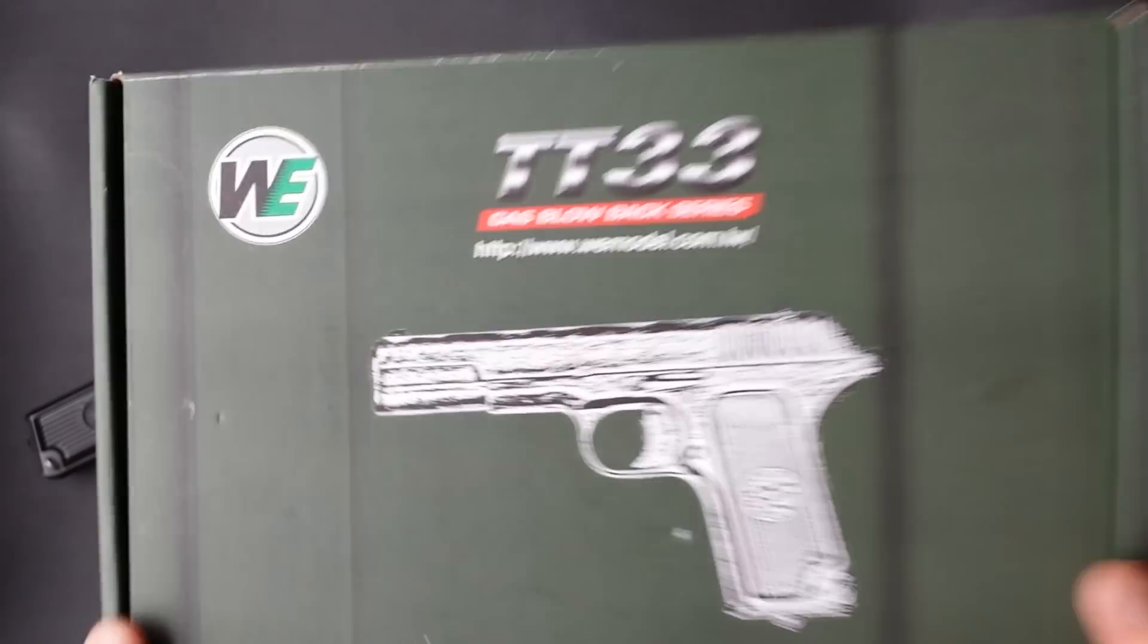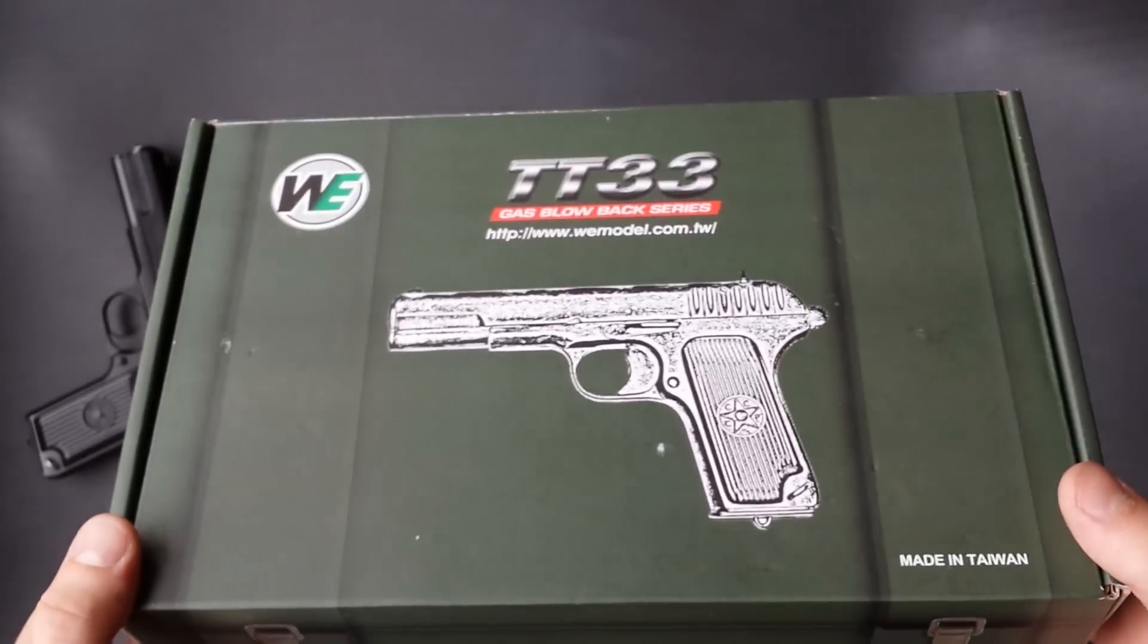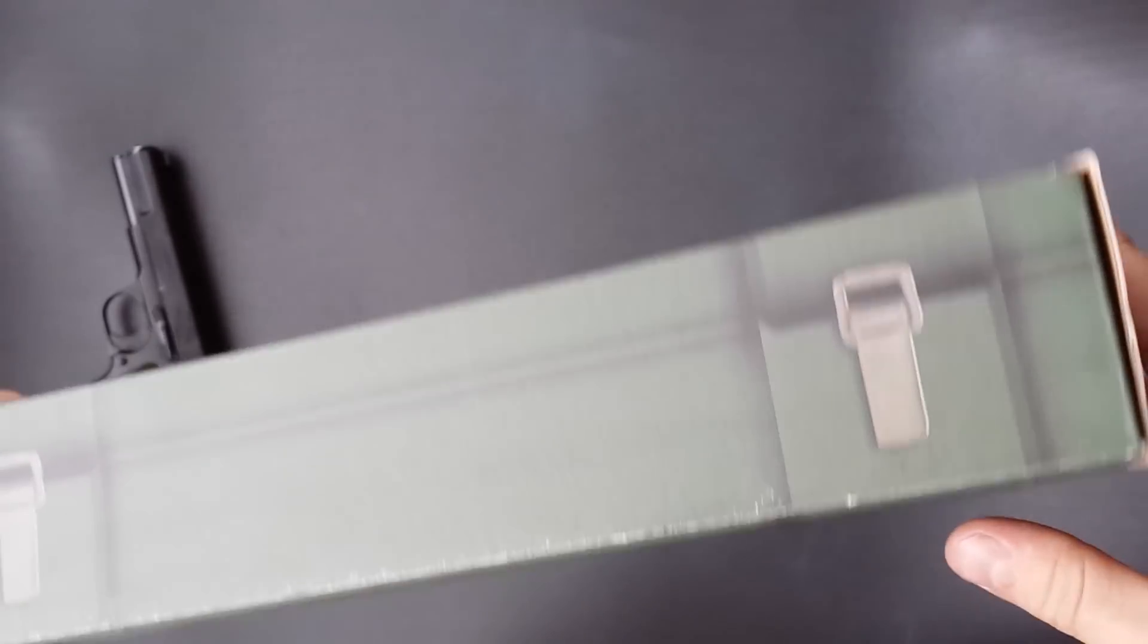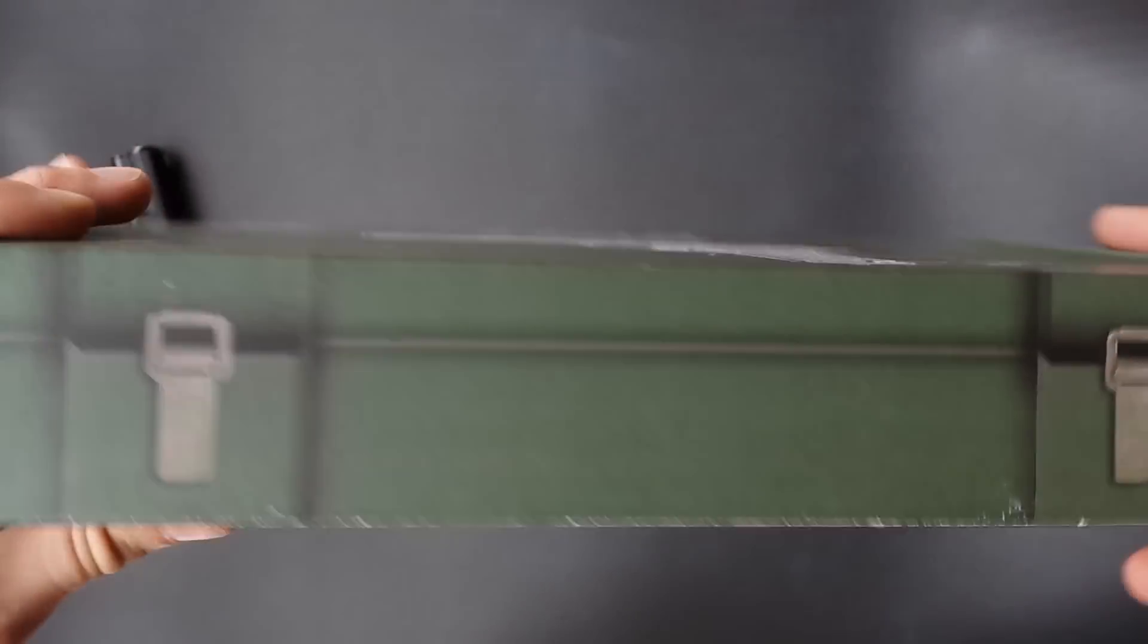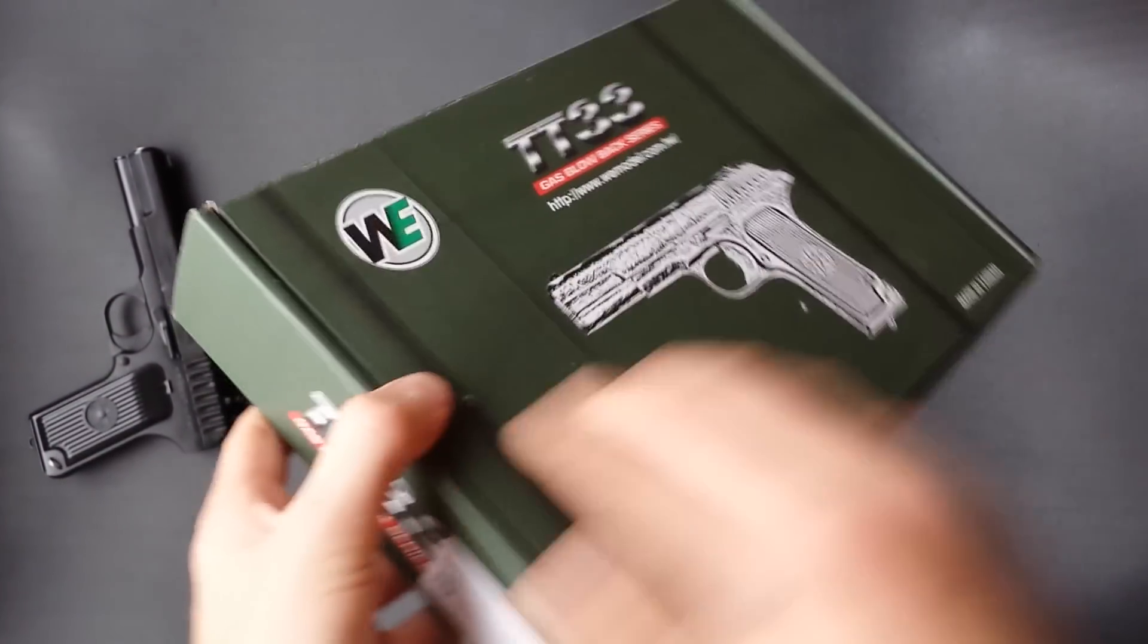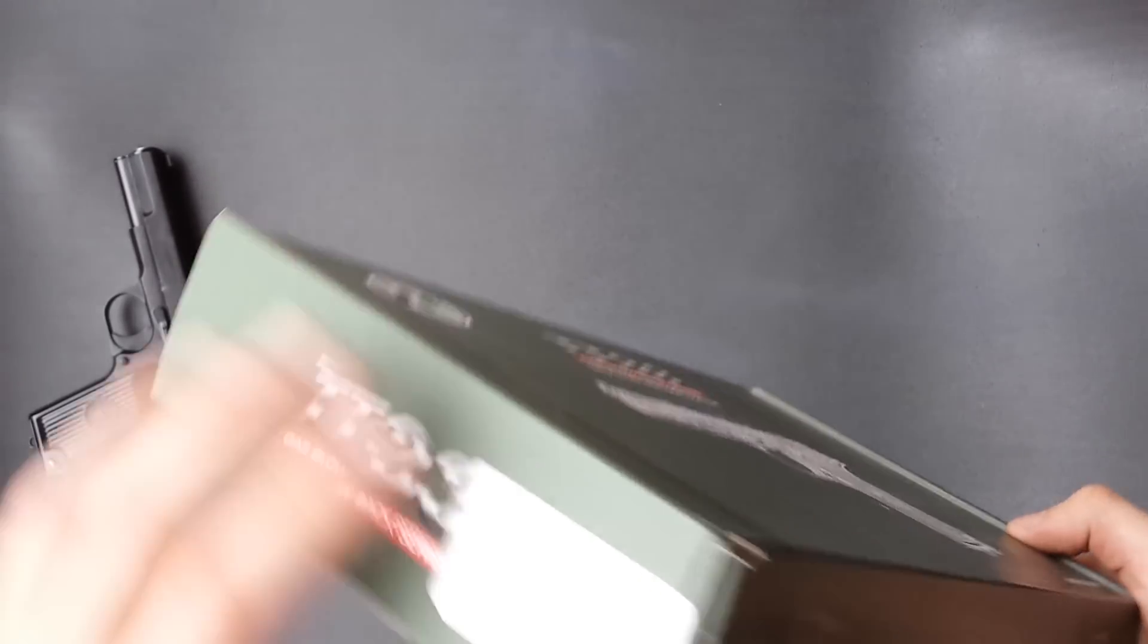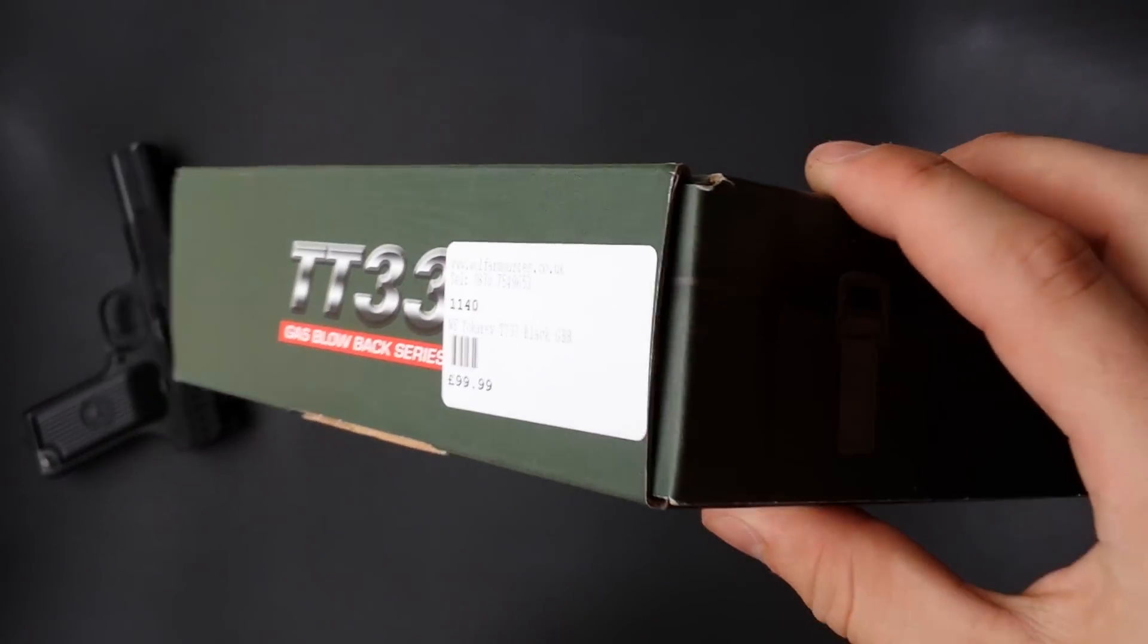It is the TT33 Tokarev gas blowback pistol. Unlike old WE's that come in a plain brown cardboard box, they've put effort into this. It looks like a little case, pretty cool actually. If you had a stack of these, it would look quite good. Quite a nice box. Here's the sticker from where I bought it, Wolf Armories.